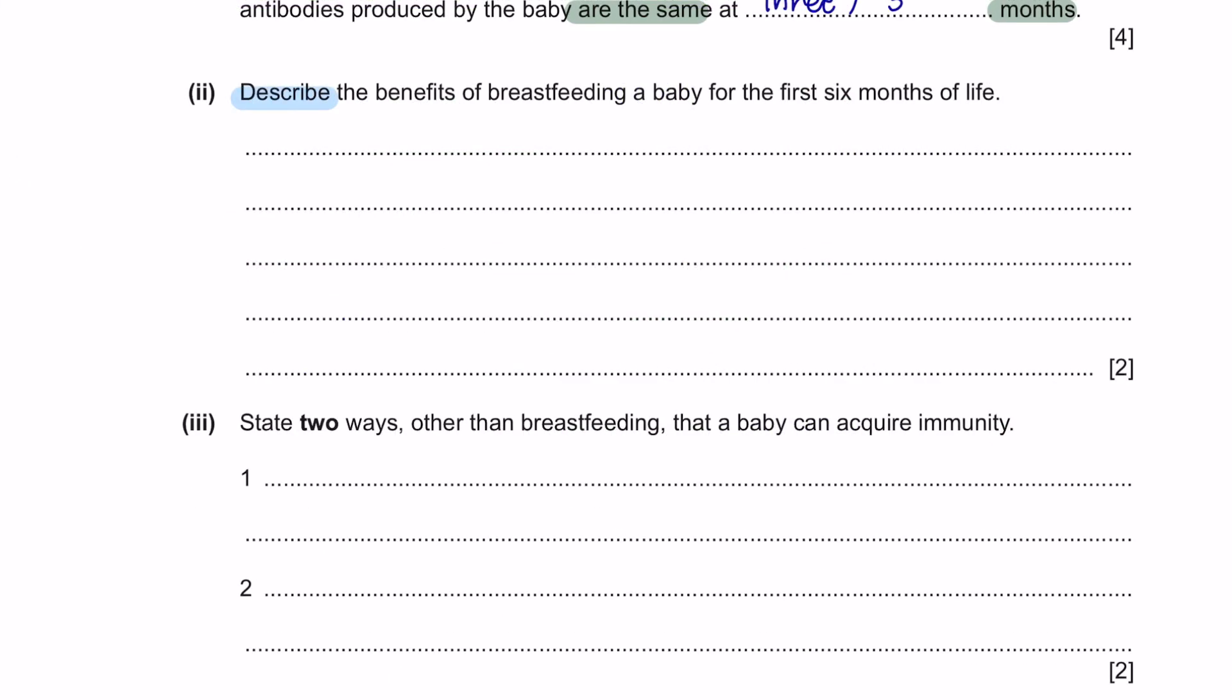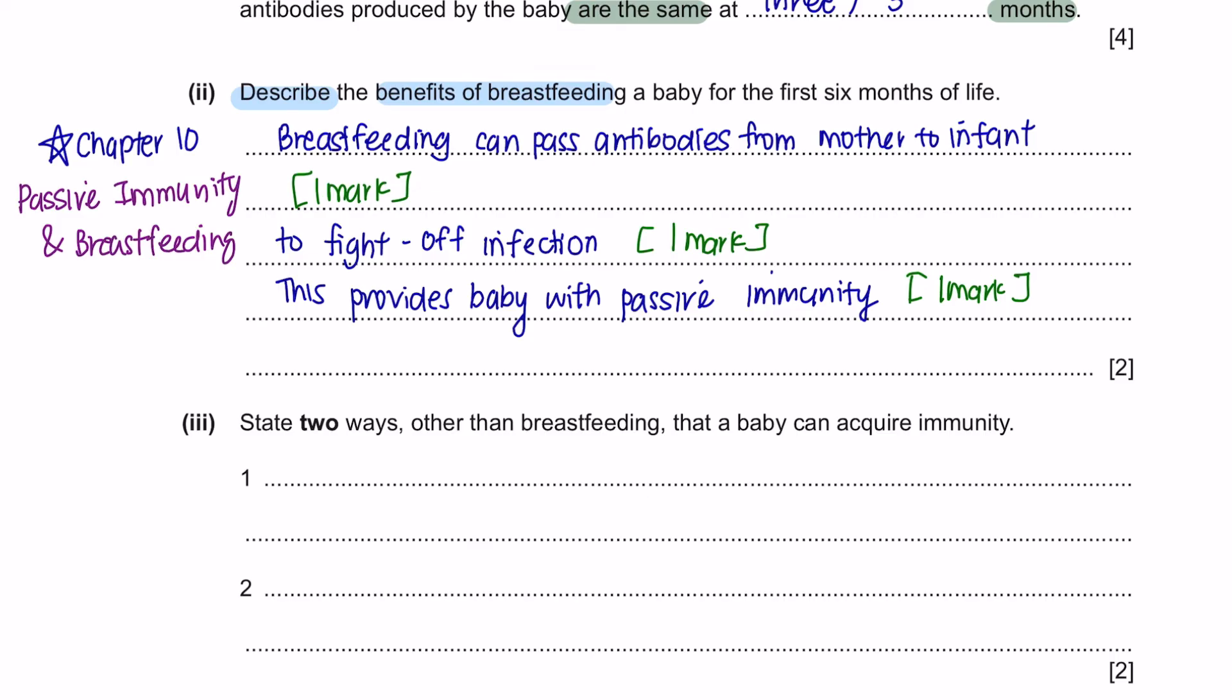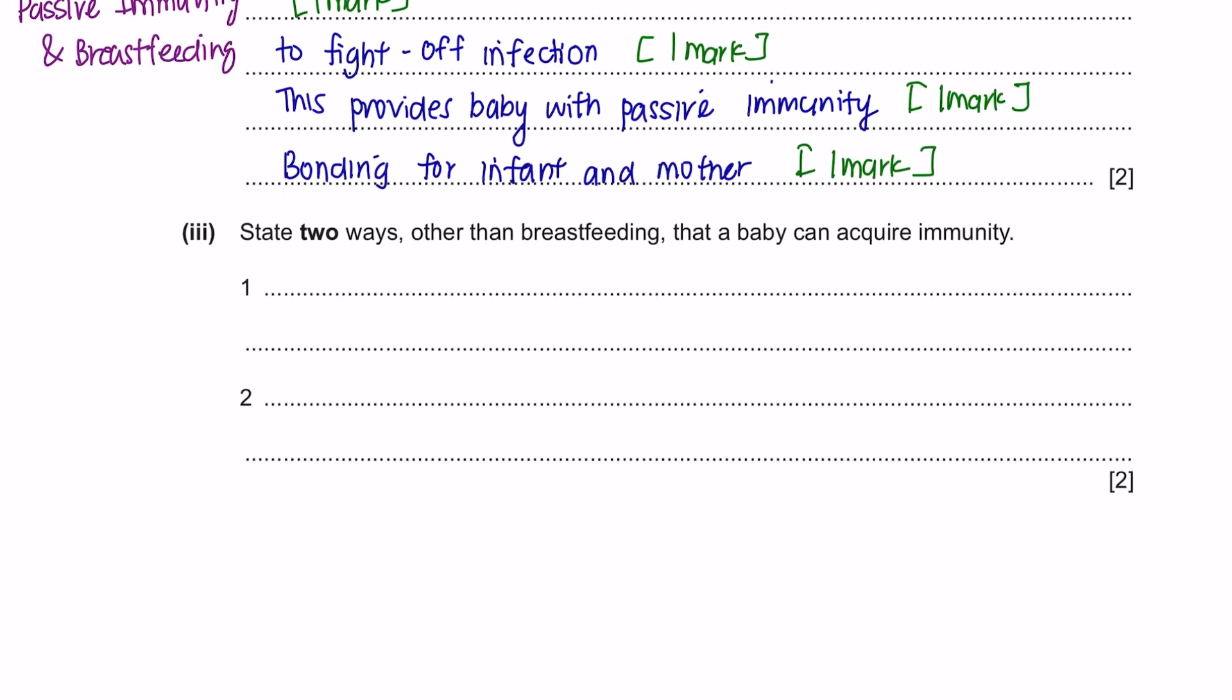Part 2. Describe the benefits of breastfeeding a baby for the first 6 months of life. You will learn about diseases and immunity in chapter 10. In this chapter, you will learn about passive immunity and breastfeeding. Passive immunity is a fast-acting, short-term defense against pathogens by antibodies acquired from another individual. These antibodies can be passed from mother to infant via breast milk. This is important because it can help the young infant to fight off infection. Apart from immunity, breastfeeding could also help the baby and the mother to bond. Part 3. State 2 ways other than breastfeeding that a baby can acquire immunity. Apart from passive immunity, there is also active immunity.